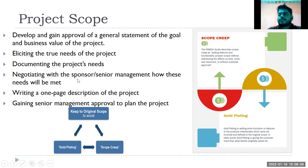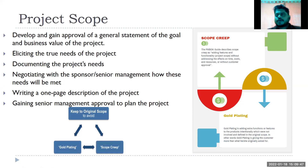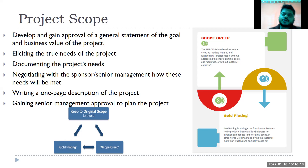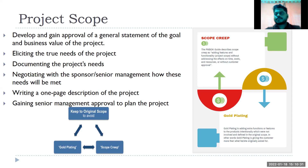Negotiating with the sponsor and senior management about how these needs will be met, because customers want everything at the lowest cost with the least possible time — which is not always possible. Think about the Indian government asking DRDO or HAL to build a fifth generation aircraft within five years. We took 20 years to develop a light commercial aircraft. So whoever leads that organization has to come forward and negotiate what is possible and what is not possible.